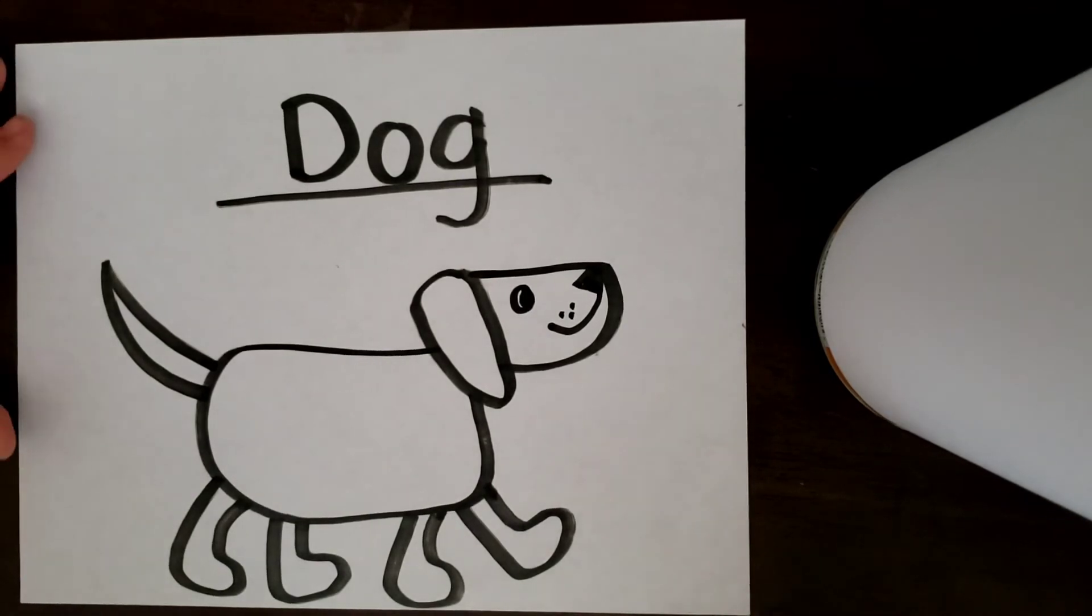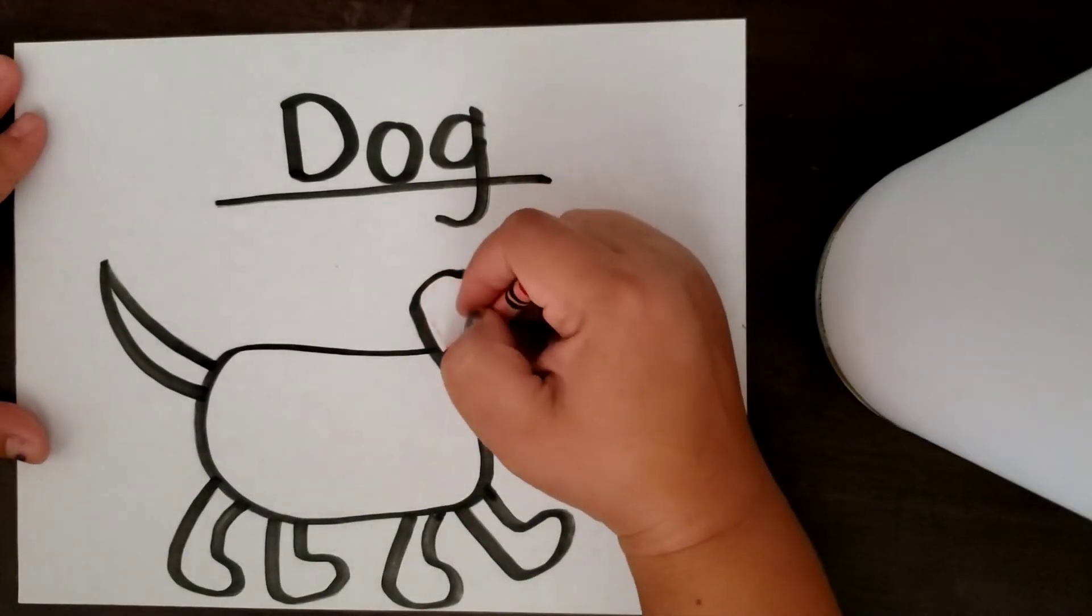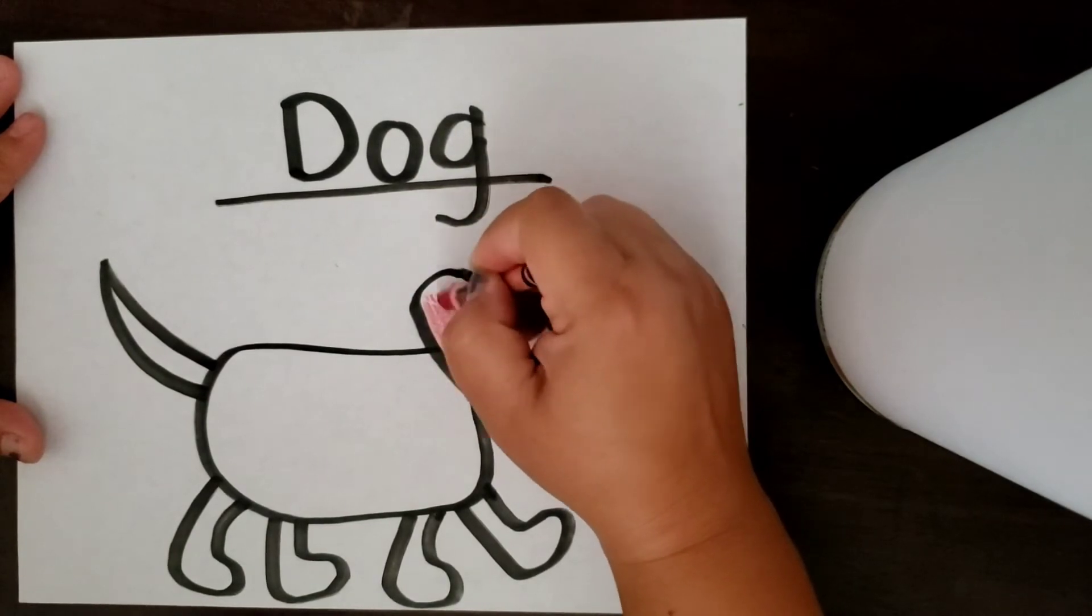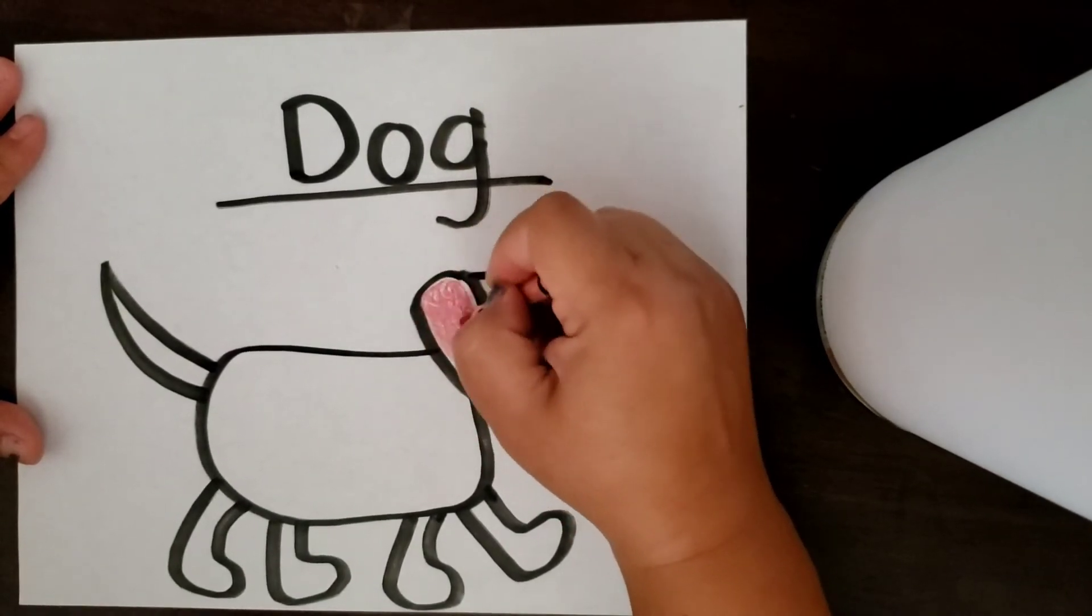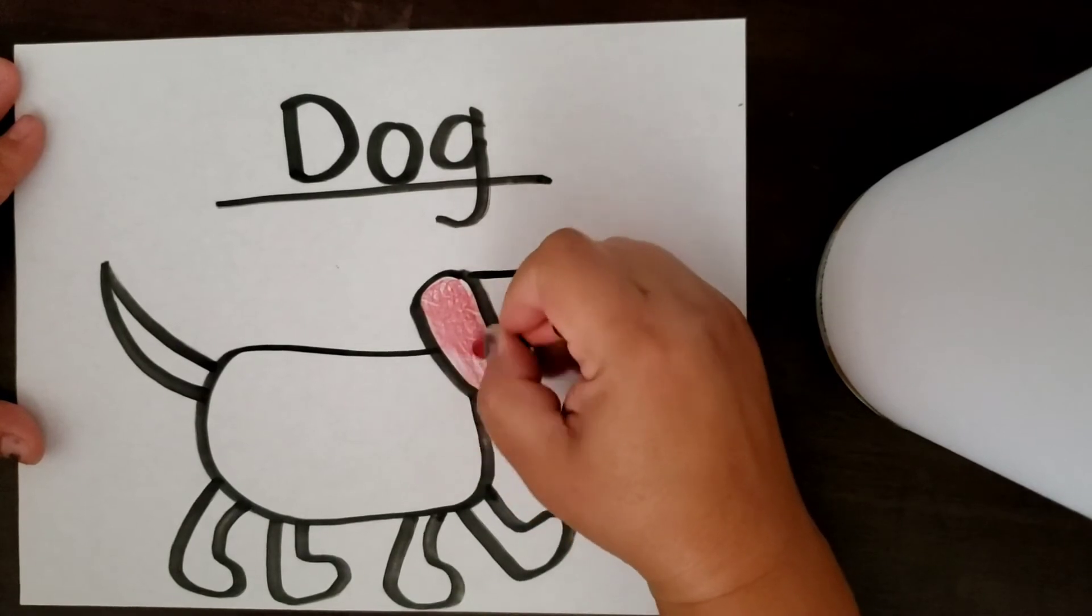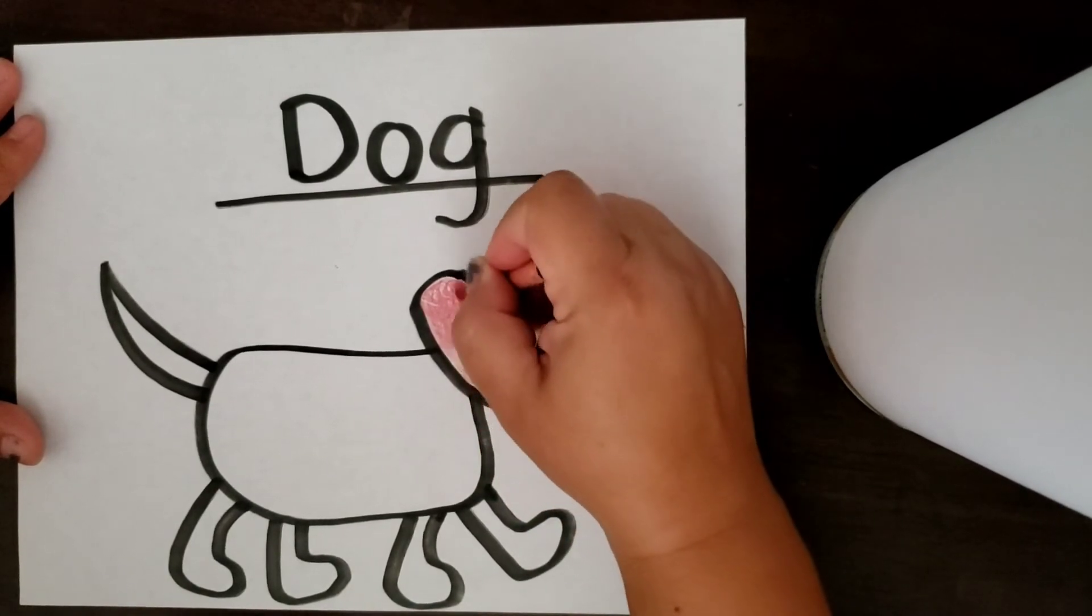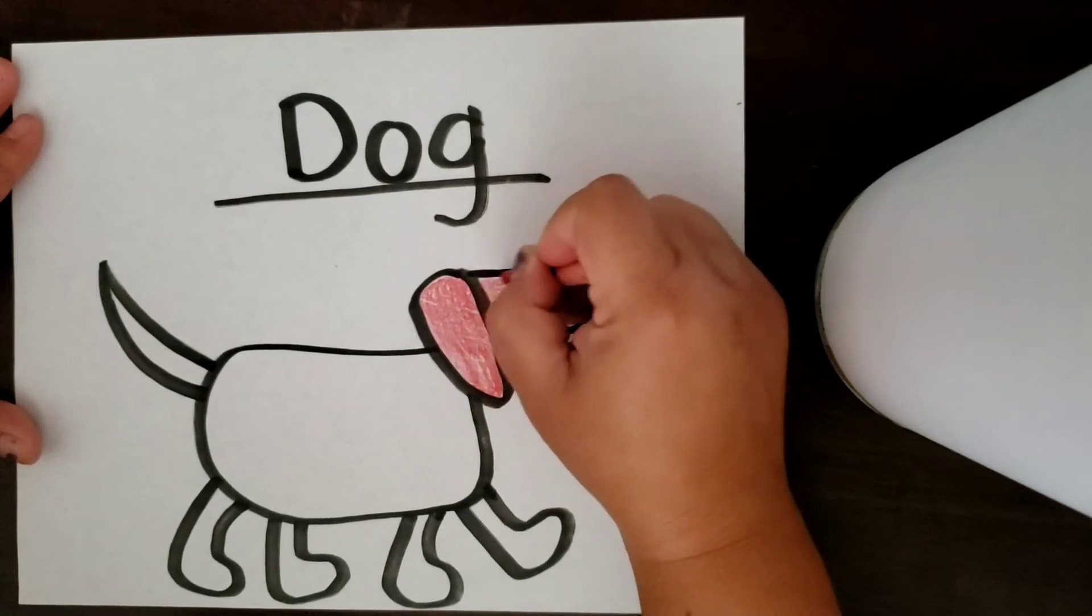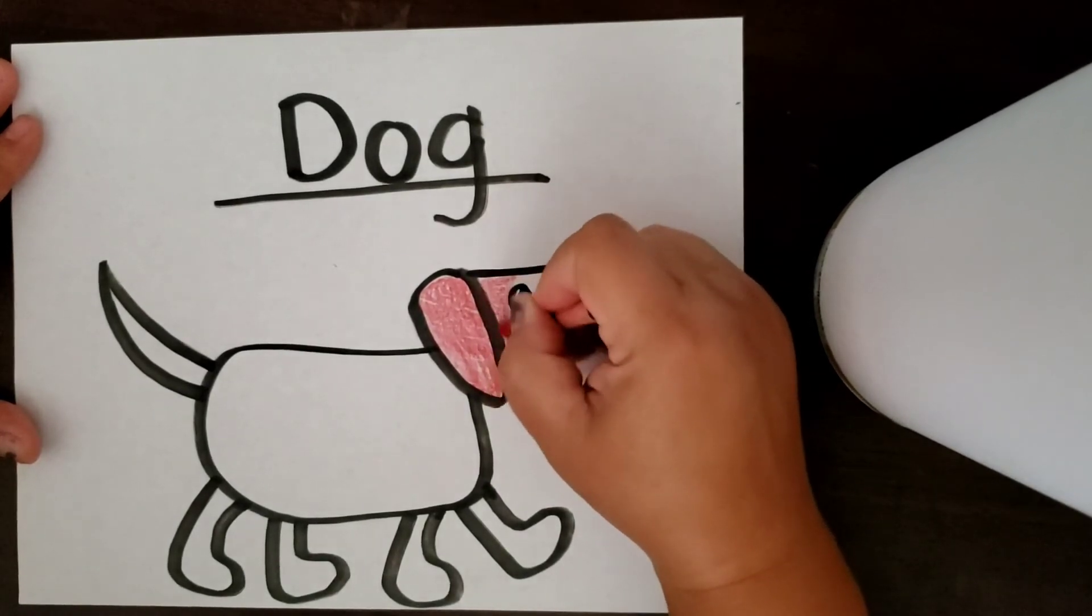You get your crayon and color him in or her. Him or her. I'm using red for my student that requested a dog today. Don't color in the eye because the eye is white.